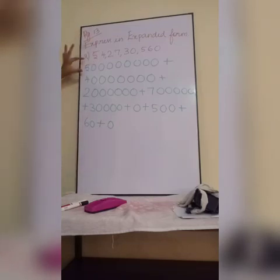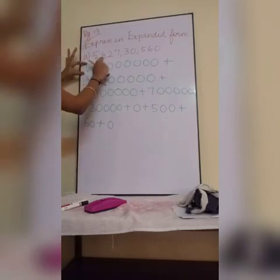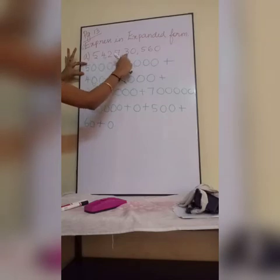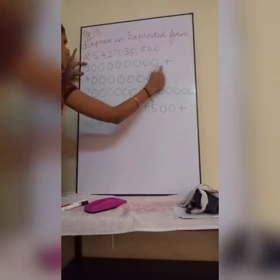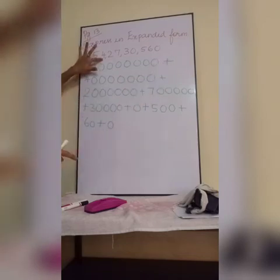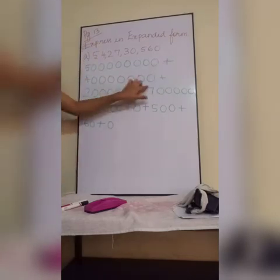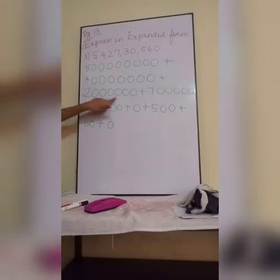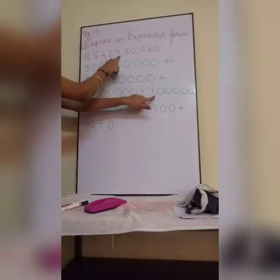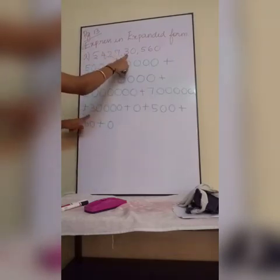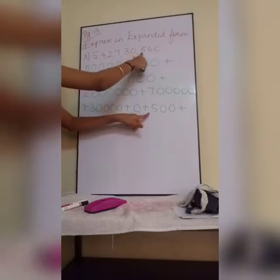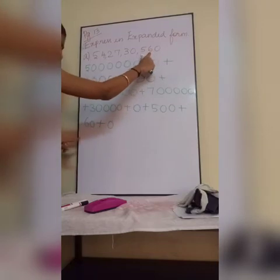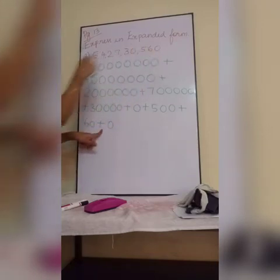Listen — first I am taking the first digit. After that, how many digits are there? 1, 2, 3, 4, 5, 6, 7, 8 — so 8 zeros. Plus then 4, then 7 zeros. Plus then 2, 6 zeros. Plus 7, 5 zeros. Plus 3, 4 zeros. Plus 0. Plus 5, 2 zeros. Plus 6, 1 zero. Plus 0. Understood how to write the expanded form?